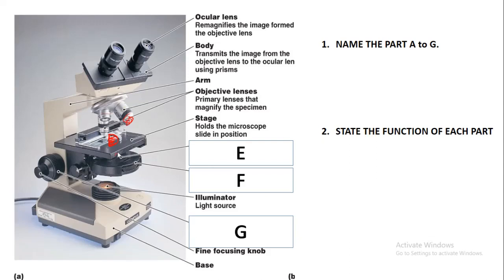The next part is the condenser. The condenser works together with the illuminator. The illuminator is the source of light — it produces light, since we are talking about a light microscope which needs a source of light. The illuminator produces the light and this light is focused onto the specimen by the condenser. Please make sure that you register with Excel Academy and subscribe to our YouTube channel.